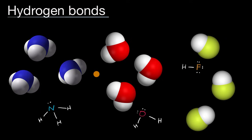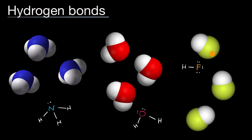Let's talk about hydrogen bonds. Depicted here, I have three different types of molecules. On the left, I have ammonia — each ammonia molecule has one nitrogen bonded to three hydrogens. In the middle, I have something you're probably very familiar with — in fact, you're made up of it — which is water, where each oxygen is bonded to two hydrogens. And on the right, I have hydrogen fluoride, where each fluorine is bonded to one hydrogen. Why are these types of molecules interesting, and what does that have to do with hydrogen bonds?